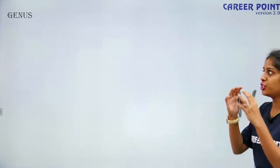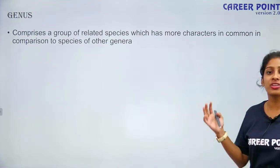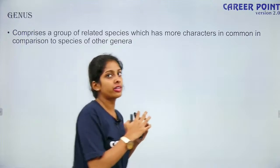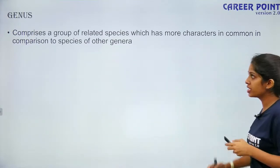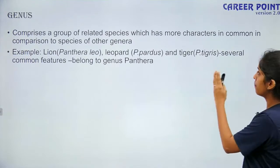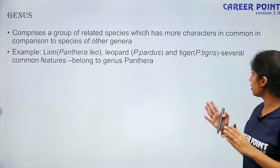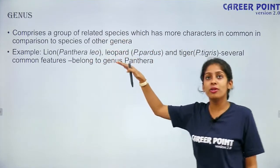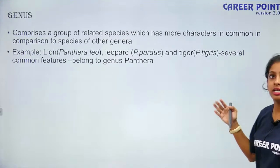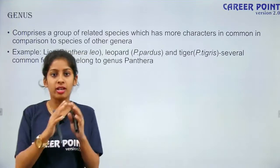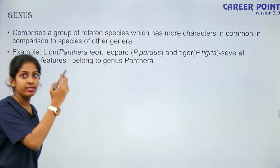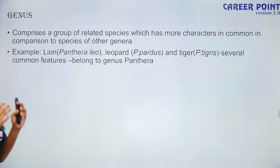Next is genus — a group of similar species makes up a genus, comprising related species with more characteristics in common. For example, lion, leopard, and tiger all belong to the same genus Panthera but different species. Panthera leo is your lion, Panthera pardus is your leopard, and Panthera tigris is your tiger. They have several common features and thus belong to the same genus but different species.